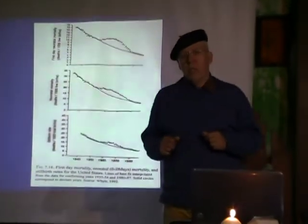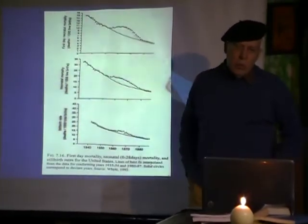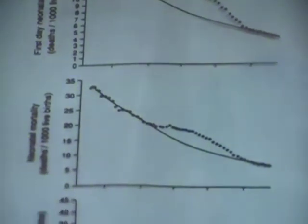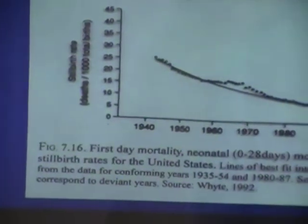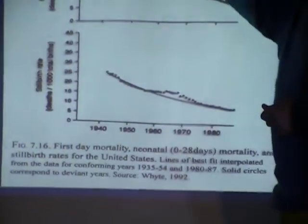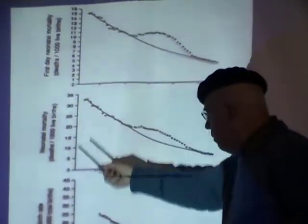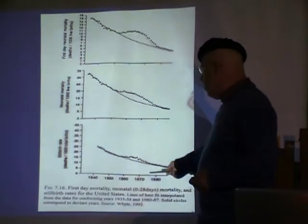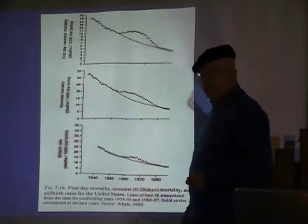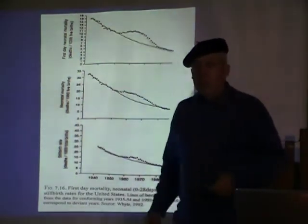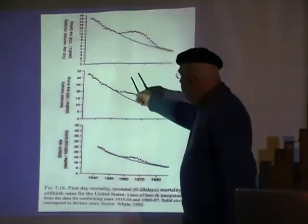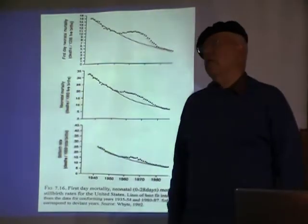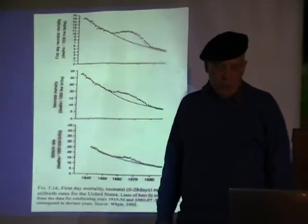The first picture you see here is from a paper by Robin White, who is a paediatrician in Canada. This paper was written in 1990 and published in the British Medical Journal. To my mind it's one of the most terrifying graphs imaginable, because what it shows is infant mortality and first-day neonatal mortality — children who died at birth over this period of time: 1940, 1950, 60, 70, 80. This is first-day mortality, nought to 28 days, and stillbirth rates for the United States. What you can see quite clearly is a big increase in babies dying after being born in this period.